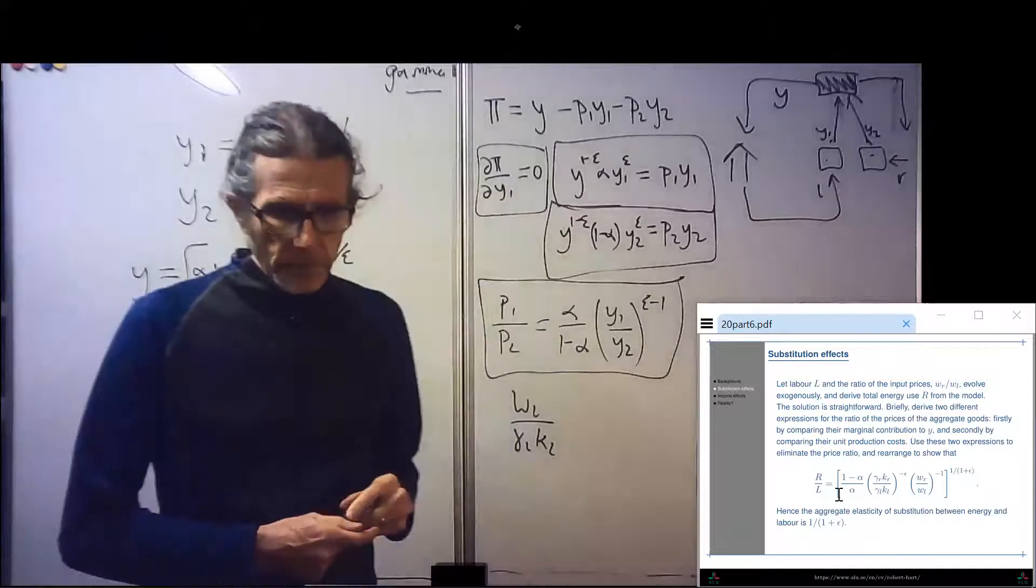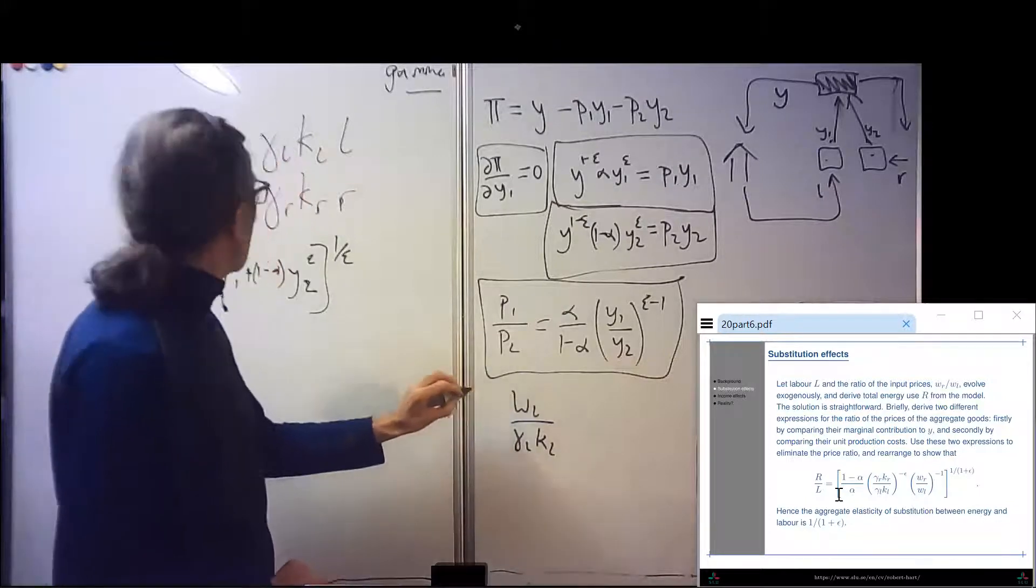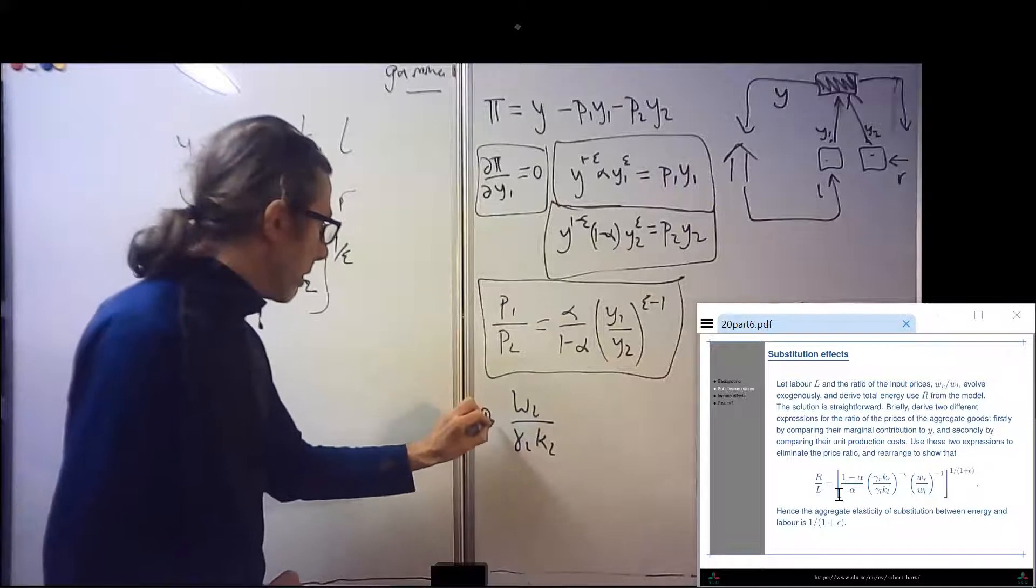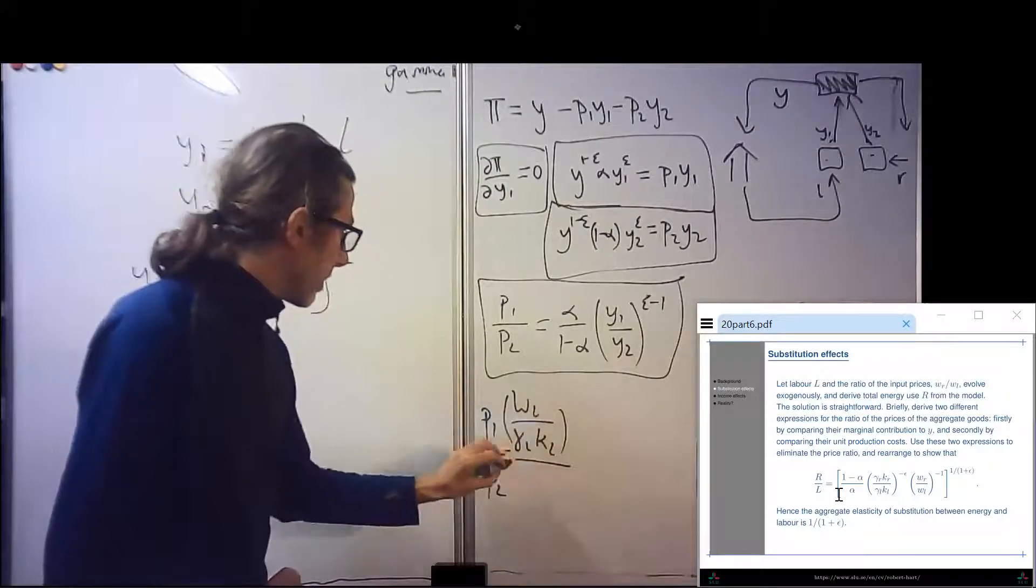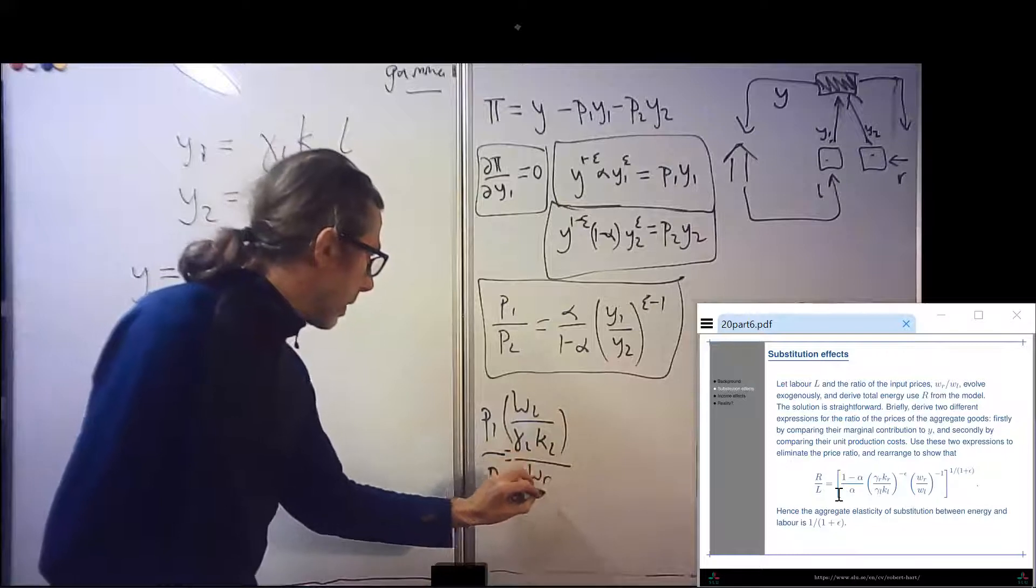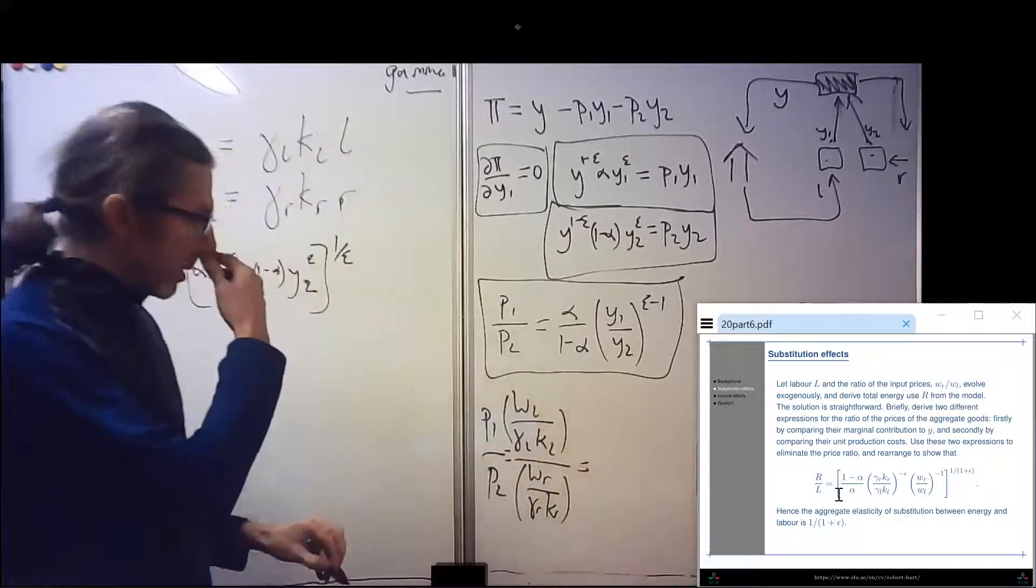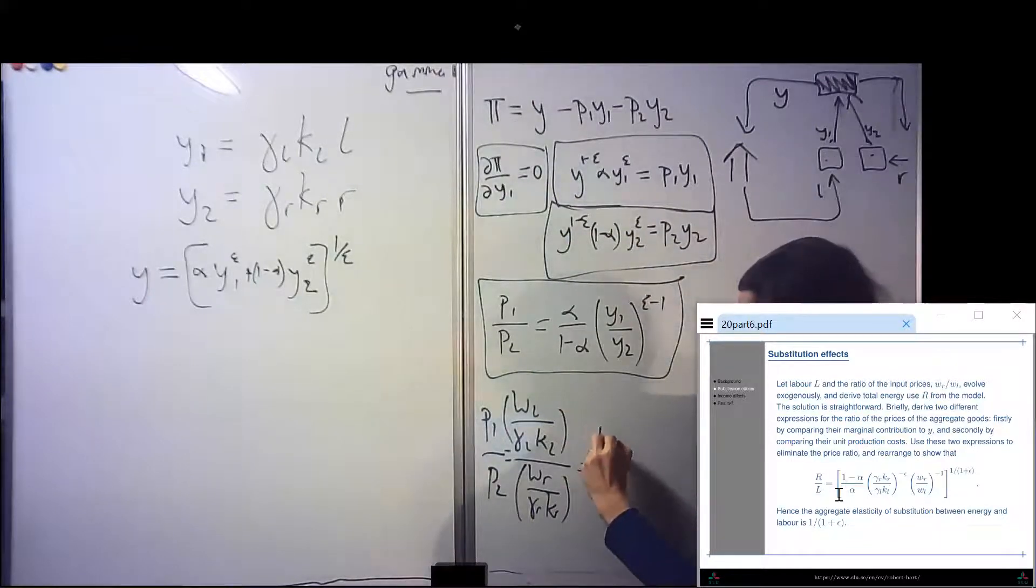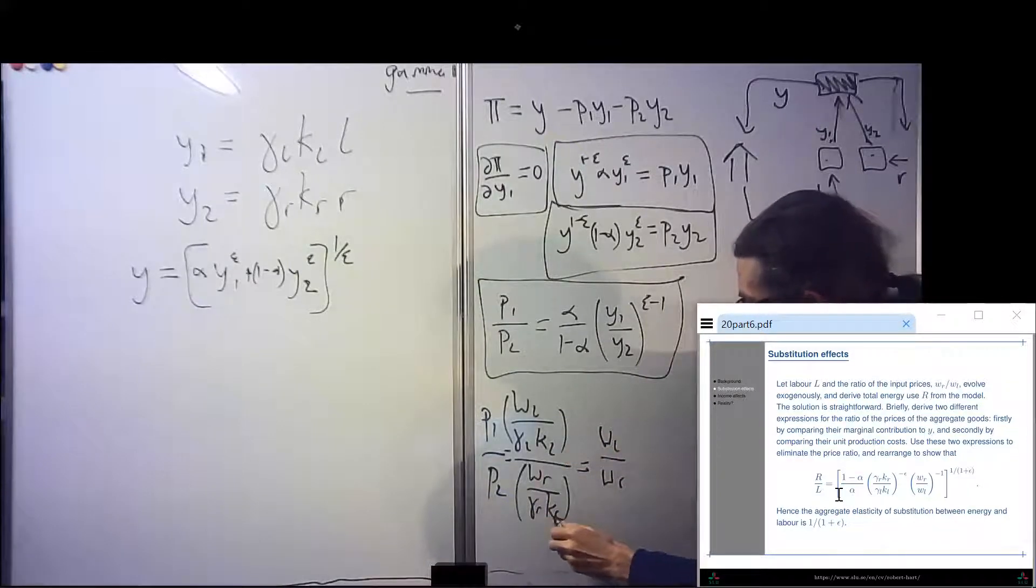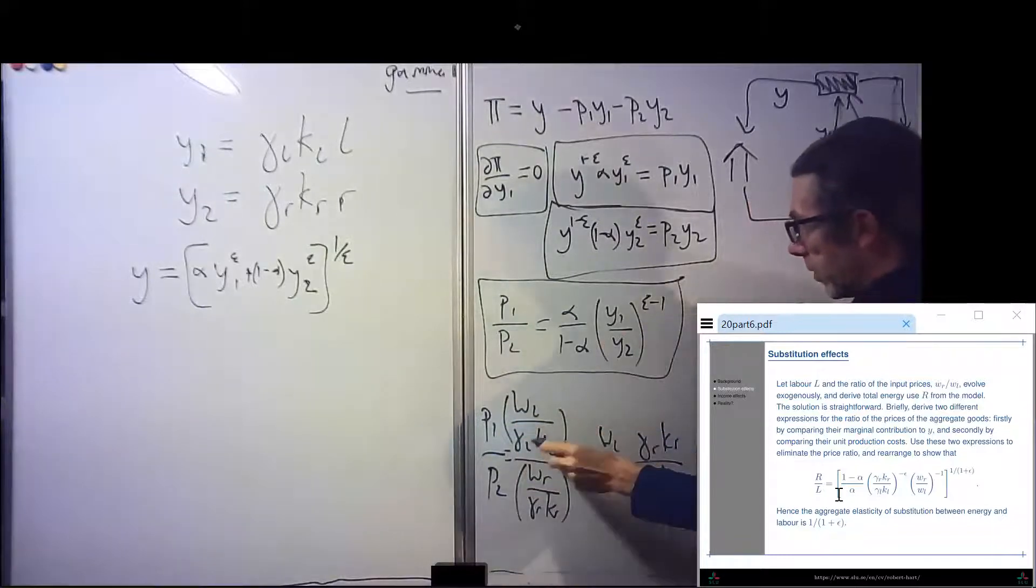Remember, we're assuming perfect competition so we can do this. It's so straightforward because it's a linear production function with only one input. You could set up a profit maximization problem, but this guy and this guy as well get the same thing. So P1 over P2 equals that over the symmetric expression, which is WR over gamma R KR. So putting that together, we should get WL over WR times gamma R KR over gamma L KL. So that's two expressions for the relative prices.